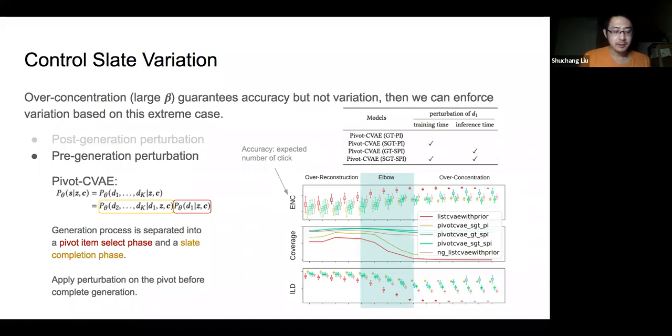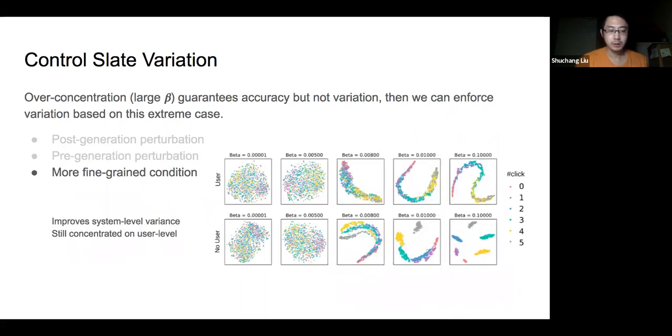On the other hand, applying perturbation during inference tends to improve the variance even more but may sacrifice accuracy. Additionally, a nice property of VAE-based models is the informative encoder. In our experiment, we can use them to observe the slate encoding and see how slate variance is influenced on the space of latency.